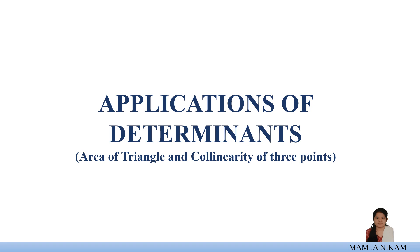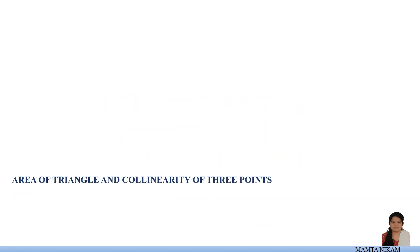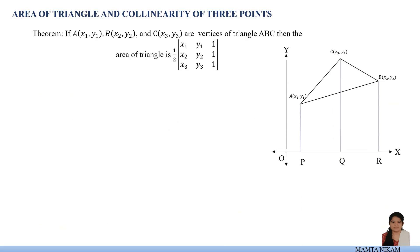Using determinants, how to find the area of a triangle and how to check the collinearity of 3 points. Suppose we have a triangle A, B, C with vertices: A(X1, Y1), B(X2, Y2), C(X3, Y3). Then the area of a triangle is given as half times the determinant value of the 3×3 matrix with rows (X1, Y1, 1), (X2, Y2, 1), (X3, Y3, 1). This is the theorem statement which tells us the area of a triangle.